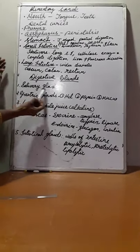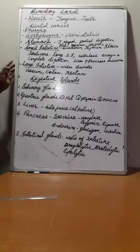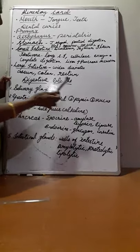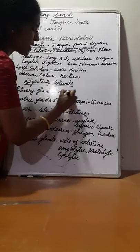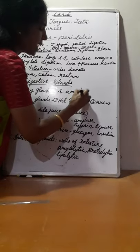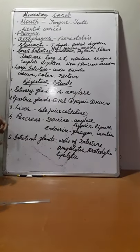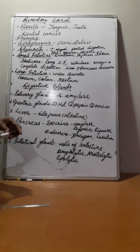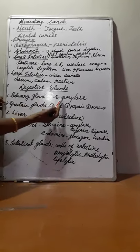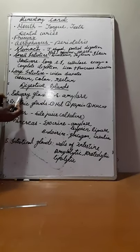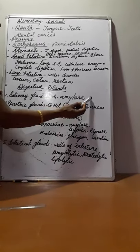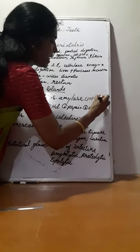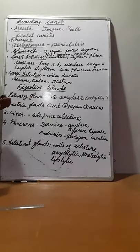Now, how do the digestive glands help in digestion? The first is the salivary gland, found in the mouth — in the buccal cavity. There are three pairs of salivary glands which secrete salivary amylase. Salivary amylase helps in the digestion of carbohydrates — the complex carbohydrate is converted into simpler form, that is maltose. The other name for this enzyme is ptyalin. So digestion starts first in the mouth.